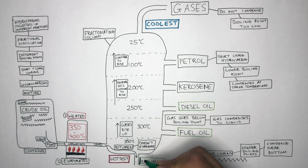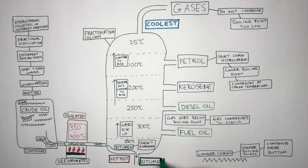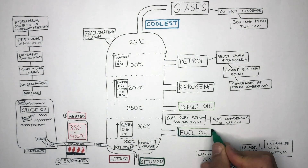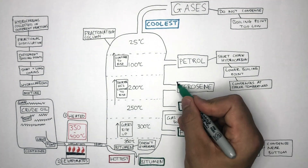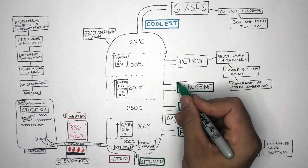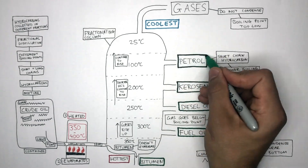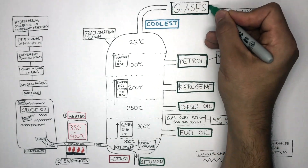So the fractions collected from bottom to top are: bitumen, fuel oil, diesel oil, kerosene, petrol, and gases.